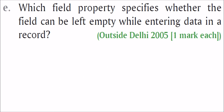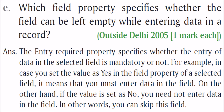Which field property specifies whether a field can be left empty while entering data in a record? The property is Entry Required. This property specifies whether entry of data in the selected field is mandatory or not. If you set the value to Yes, you must enter the data or the database will give an error. If you set it to No, you can skip it without entering anything.